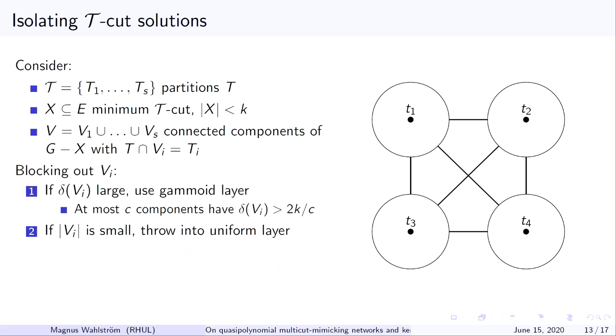We have seen two different methods for blocking out edges inside V_i. So we will be interested, as before, in blocking out edges of connected components V_i without blocking out any edge of the actual cut X. The first case is if the number of edges leaving V_i is large enough. We can afford to use a gammoid layer to block V_i. And this is because there's at most a constant number of layers which contain a constant fraction of all allowed edges. The other case, which is very simple, is if the size of V_i is small, we can just make the uniform layer bigger and throw all edges from V_i and all edges from other small components into one single uniform layer.